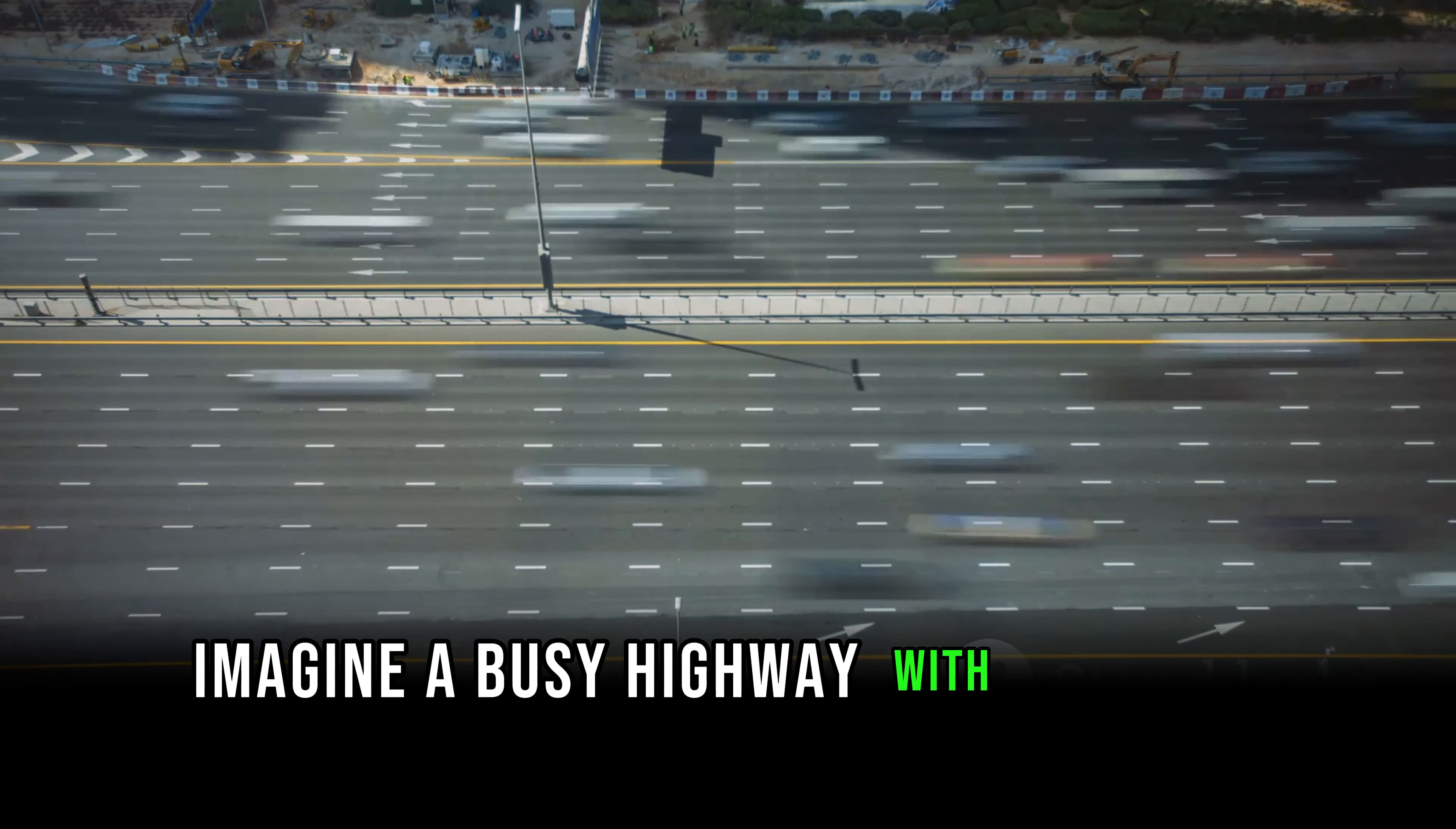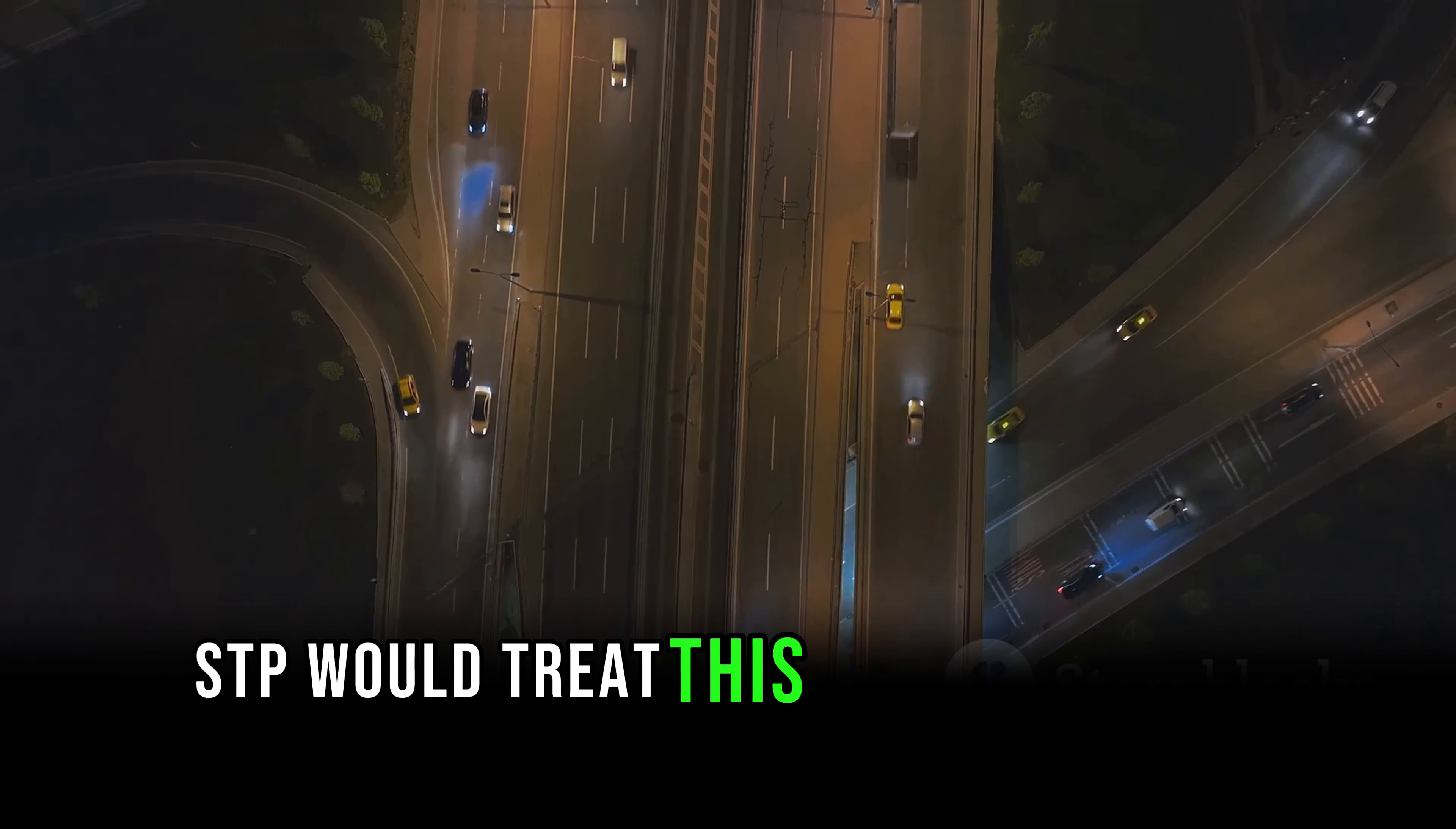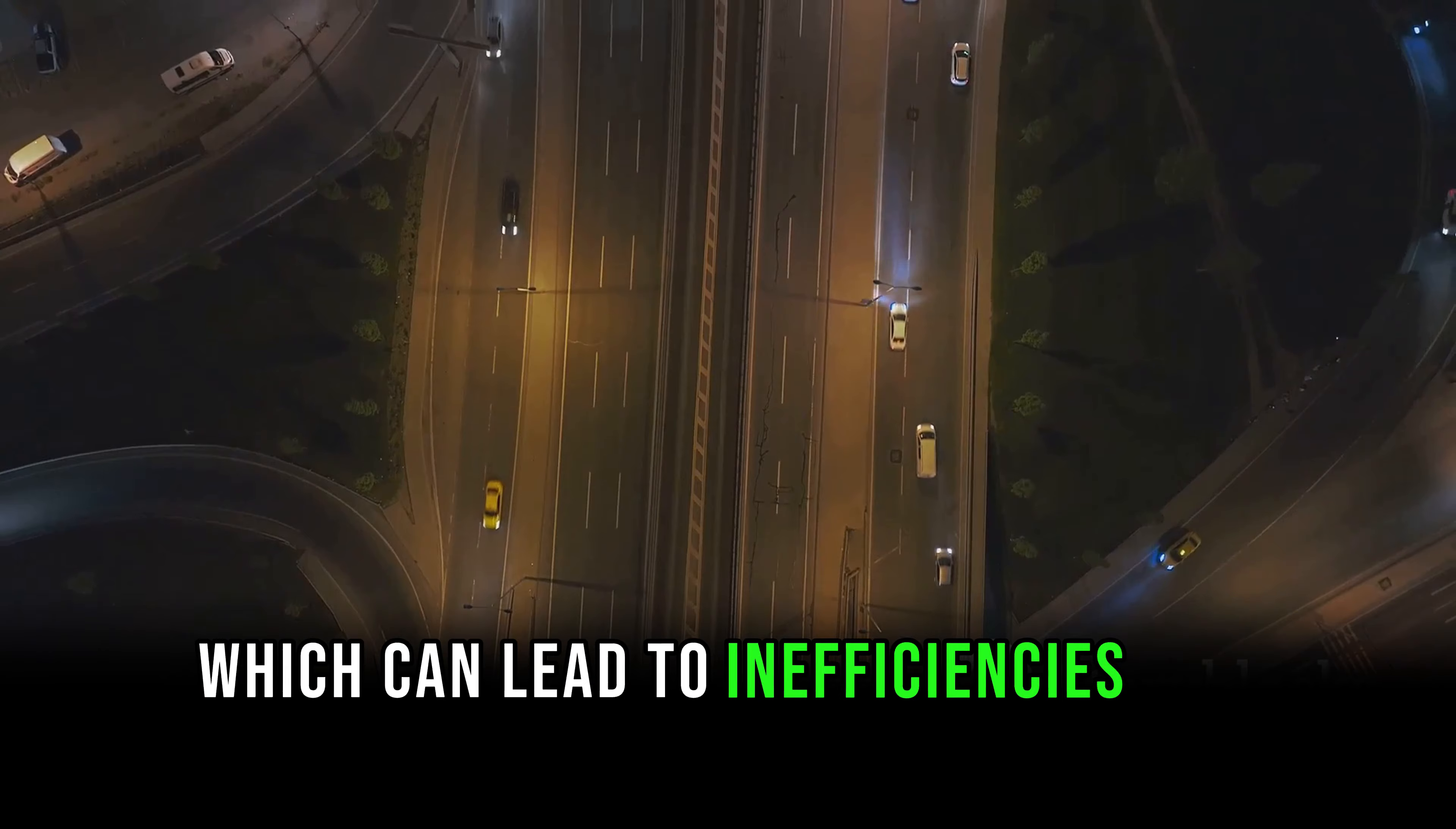Imagine a busy highway with several lanes. Each lane is like a VLAN in a network, carrying its own unique traffic. Now, the original STP would treat this highway as one single entity, managing all lanes together. This is like having one traffic cop for the entire highway, which can lead to inefficiencies and bottlenecks.